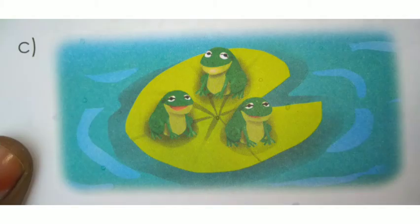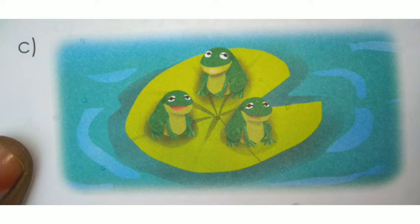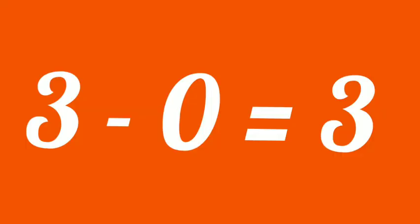Look at the next image, children. 3 frogs are sitting on the leaf. The leaf is on the water. If they want to reach the land, they have to jump from the leaf which is on the water. No frog is ready to jump away from the leaf. 3 is full, nothing is ready to jump, so 0. 3 minus 0 equals 3. Whole minus part equals part.